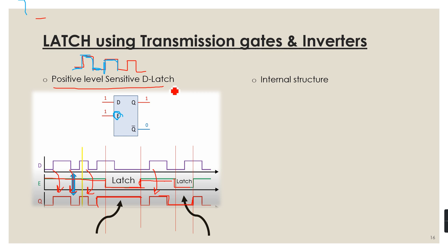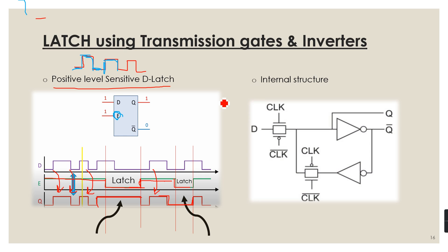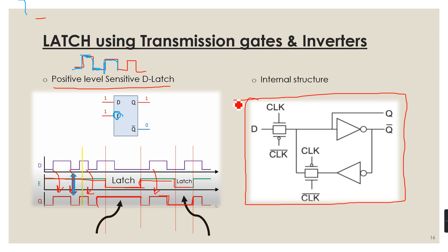The entire logic is opposite in the case of a negative level-sensitive D latch. Now let us look at the internal structure of the positive level-sensitive D latch. It has two transmission gates — gate 1 and gate 2. If you observe carefully, these two gates are complementary to each other: clock-bar is applied to one bubble input and clock to the other, which means at any point in time only one gate can be on and the other is automatically off.